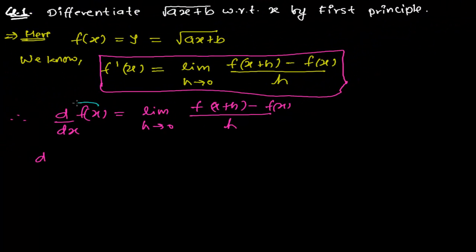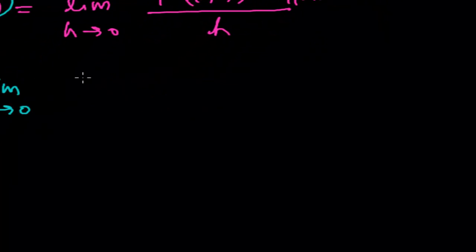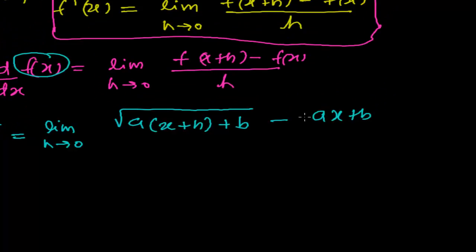We can write this as dy by dx, the limit as h tends to 0 of f of x plus h, where x is replaced by x plus h. So it will be root over a times x plus h plus b, minus f of x which is root over ax plus b, all divided by h.